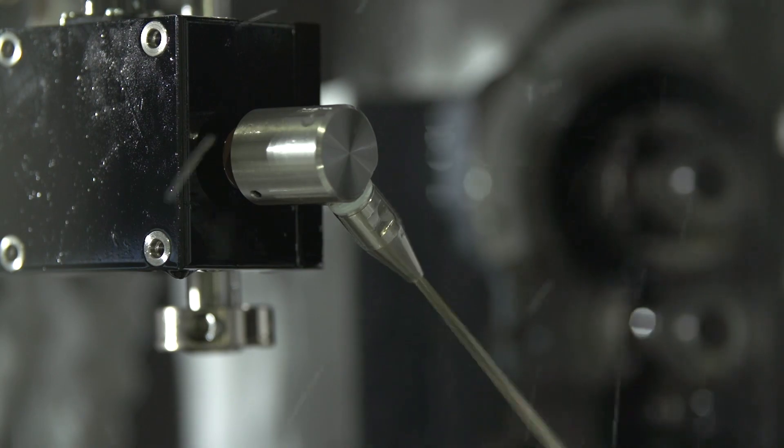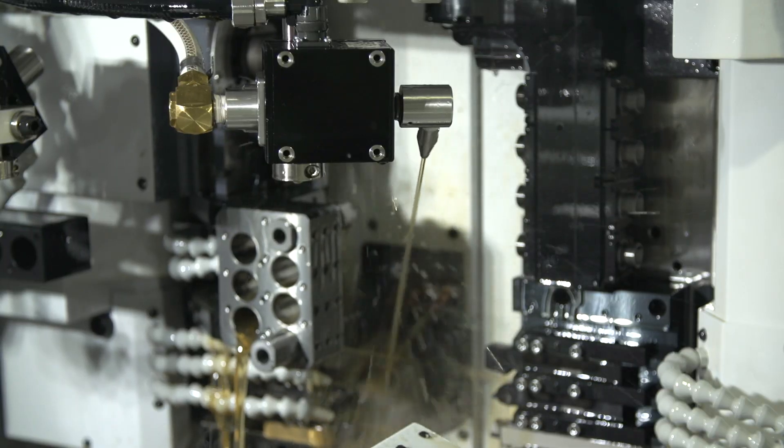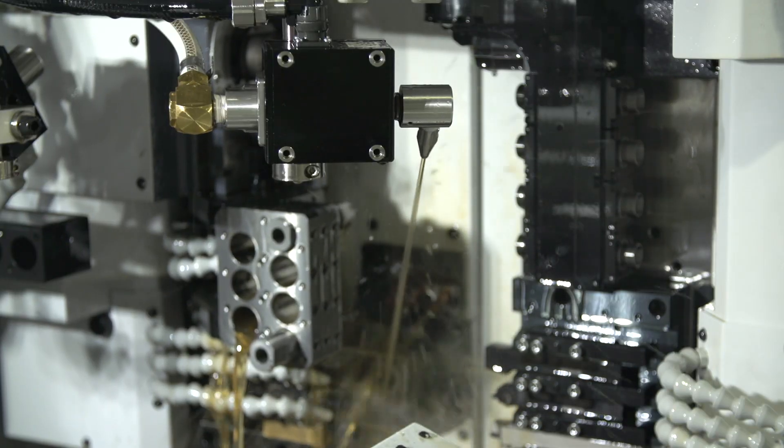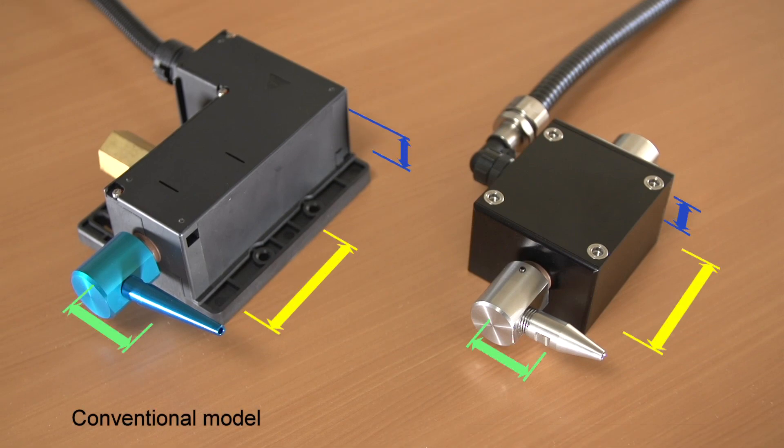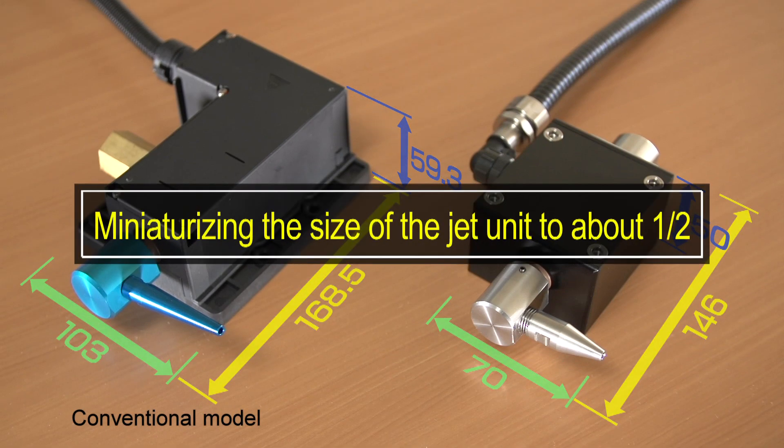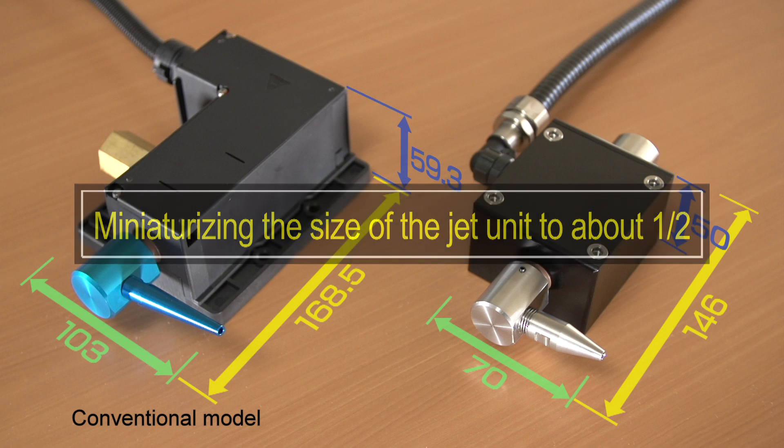Wavy Nozzle 2 has successfully miniaturized the size of the main unit at 49.7% of its previous size, so that this model can be mounted on machine tools operating in small working areas.